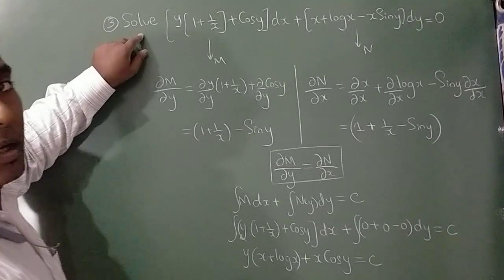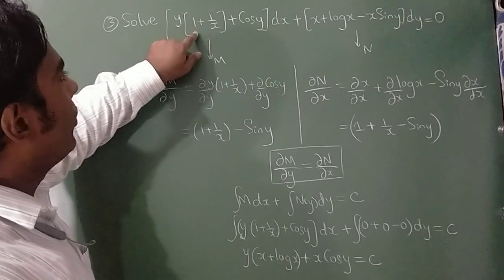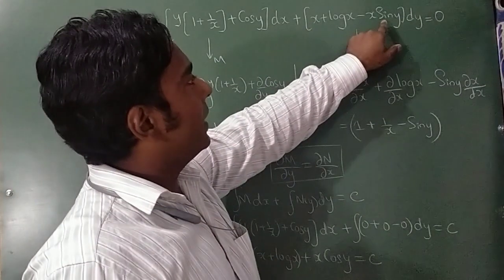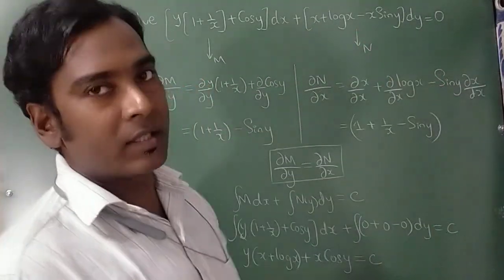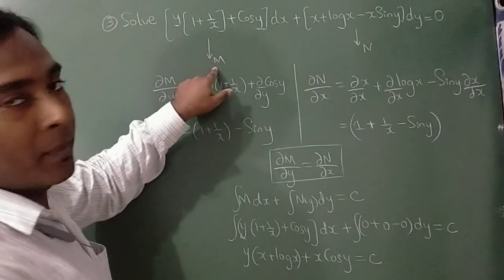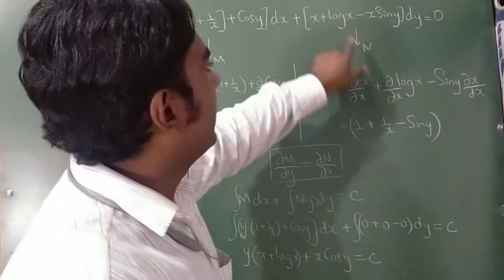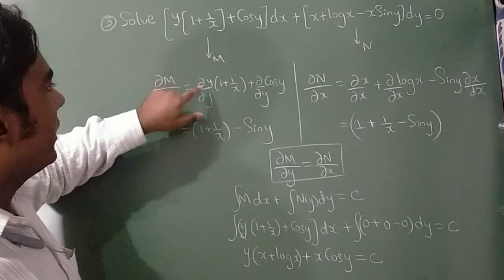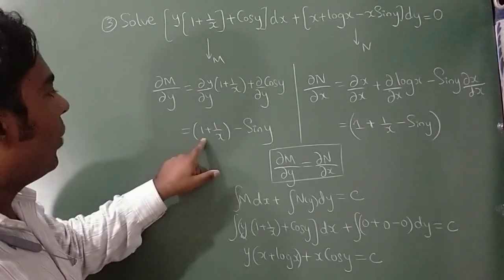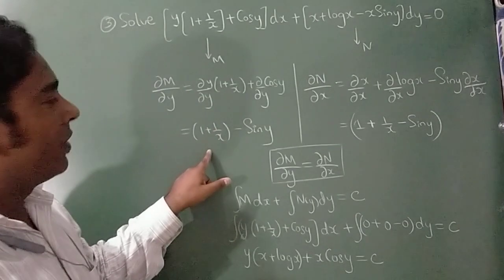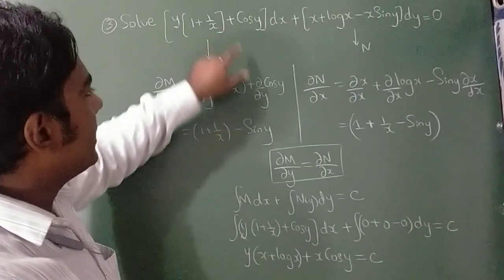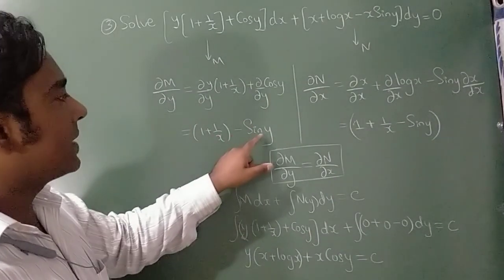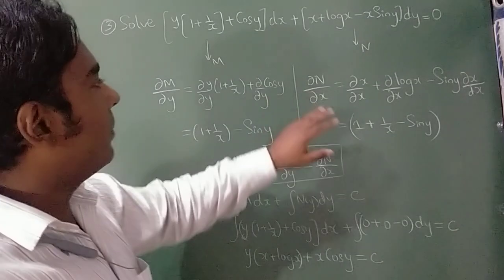Question 3: Solve y(1 + 1/x + cos y) dx + (x + log x - x sin y) dy = 0. M = y(1 + 1/x + cos y) and N = x + log x - x sin y. Differentiating M with respect to y: (1 + 1/x) remains, and differentiating cos y gives -sin y. So ∂M/∂y = 1 + 1/x - sin y.